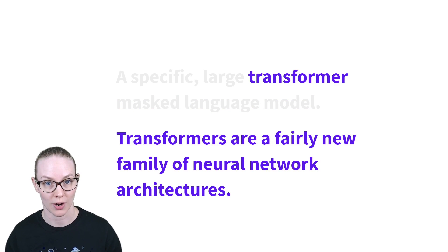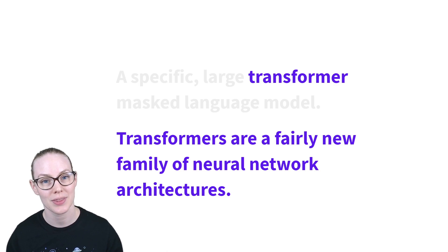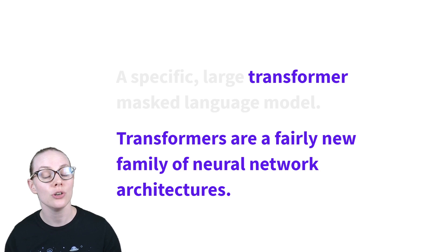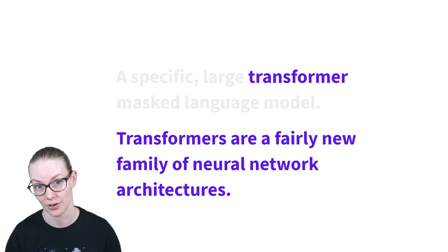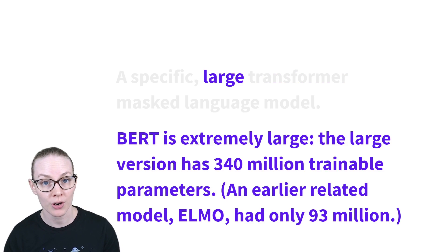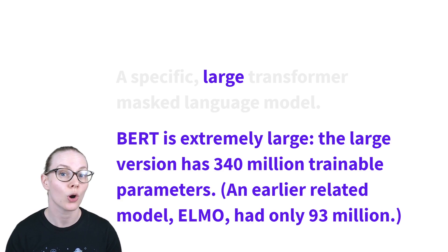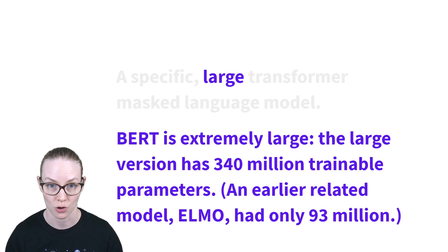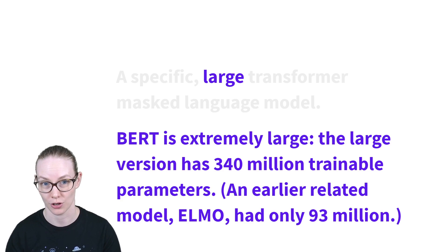Transformers — if you've watched the video in the series on Transformers, you're already familiar with them — they're just a new family of neural network architecture, similar to recurrent neural networks or convolutional neural networks. It is important to know that BERT is very large. Compared to earlier models for training contextual word embeddings like ELMo, BERT is around three to four times larger.